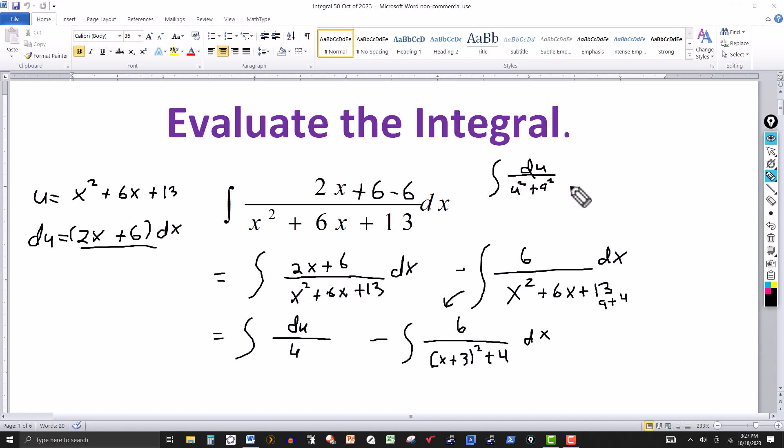So this formula tells us that the integral of anything that looks like this, in this form, du over u squared plus a squared, is equal to tangent inverse, or you can use arctangent. So it's tangent inverse of u, that'll be a function of x over the a.